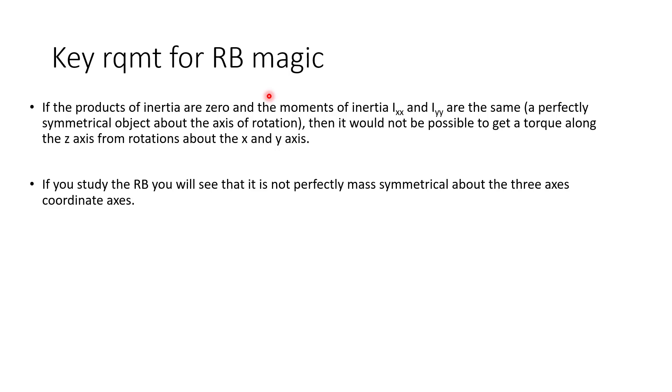So key requirements for Rattleback magic, I've mentioned this a few times. If the products of inertia are zero and the moments of inertia about the X and Y axis are the same, which implies a perfectly symmetrical object about the axis of rotation, then it would not be possible to get a torque along the Z axis from rotations about the X and Y. So I proved that mathematically. The Rattleback, if you study it, is not perfectly mass symmetrical about the three axes of rotation. It looks like it from the top, but if you turn it upside down, you'll see it's kind of oddly shaped. Definitely not symmetrical about that point of rotation. So there it is. There's the Rattleback magic.